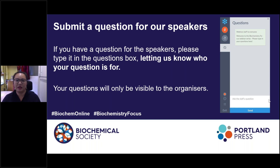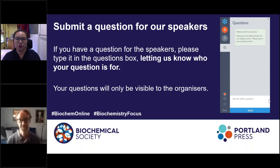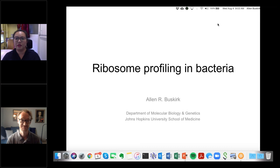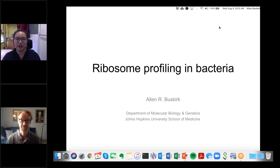Our first invited speaker today is Alan Buskirk, a research associate at the Green Lab at the Department of Molecular Biology and Genetics at Johns Hopkins University School of Medicine. The Buskirk group studies ribosome stalling and rescue in bacteria. In 2014, Alan moved to Hopkins to work with long-term collaborator Rachel Green, who focuses on ribosome quality control and mRNA surveillance in eukaryotic systems. Alan has refined ribosome profiling methods in bacteria and archaea to allow translation at codon-level resolution and to discover small proteins encoded in the genome.